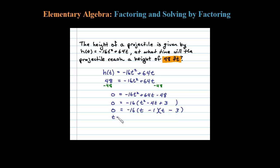Now let's set each variable factor equal to 0. So t - 1 = 0 or t - 3 = 0. This tells me I'm going to reach 48 feet when t = 1 second and also at the time 3 seconds.